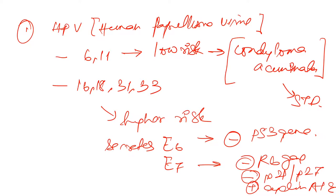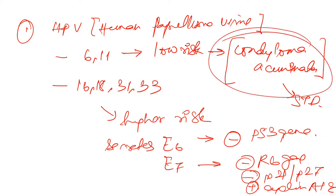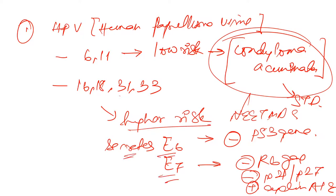To summarize HPV: strains 6 and 11 are low risk and cause condyloma acuminata. Strains 16, 18, 31, and 33 are high risk; they secrete E6 which inhibits P53, and E7 which inhibits RB gene, P21, and P27, leading to increased cyclin A or E activity.